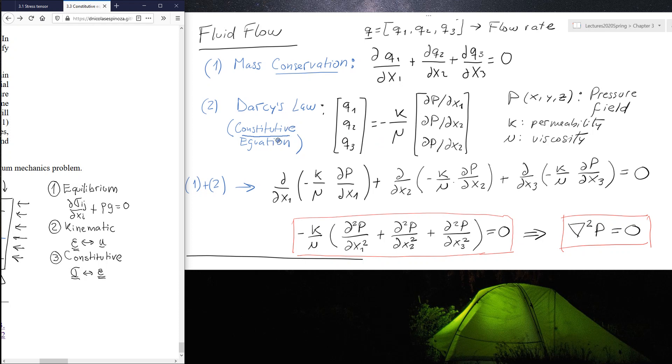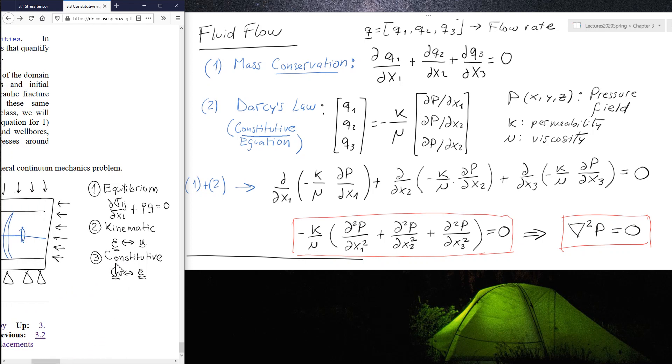Now I can combine the mass conservation equation and the Darcy's law, which is a constitutive equation. In our case, in mechanics, the constitutive equation was linear elasticity, also a property of the material. So if I combine one and two, if q1, I get it from Darcy's law, equal to minus permeability over viscosity times the gradient in direction one. This is what they have right here. And if I do the same for q2 and for q3,